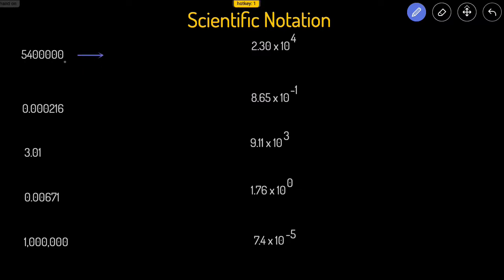The first thing we have to do is see how many times we have to move the decimal point. There's a decimal point right here and we want to move it so it's between the first two numbers, the five and the four. That's one, two, three, four, five, and six — so this would be 5.4 times 10 to the positive six.